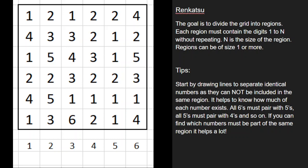Hey Puzzlers, this is Steve here with another video on how to solve some logic puzzles. This one is known as a renkatsu. How it works is you're going to be dividing the grid into regions, and each region must contain the digits 1 through N without repeating, and N is the size of the region.